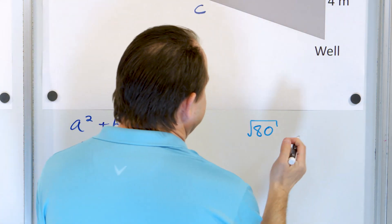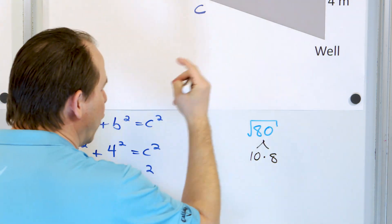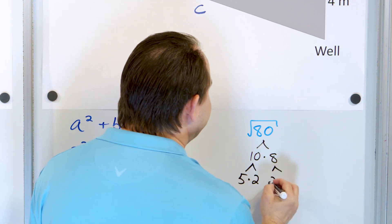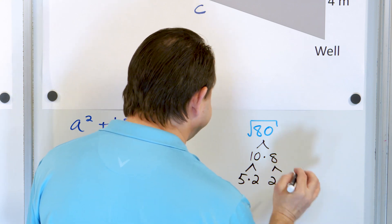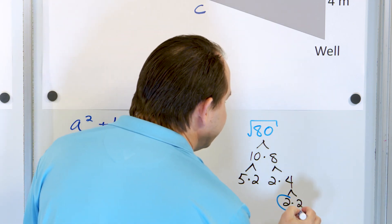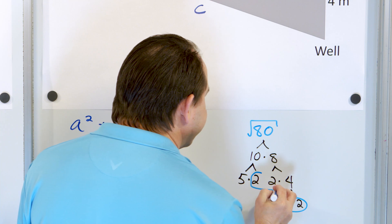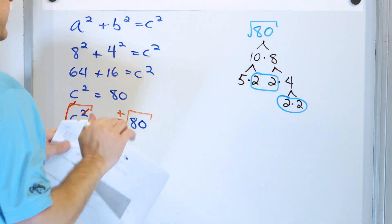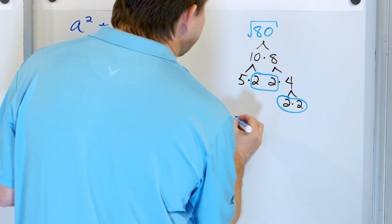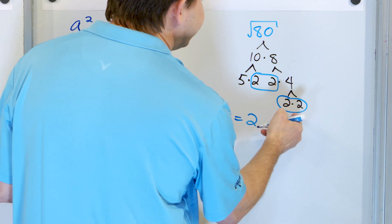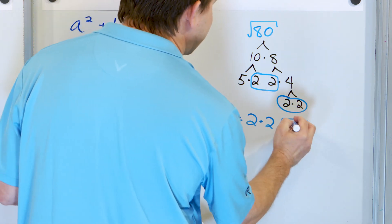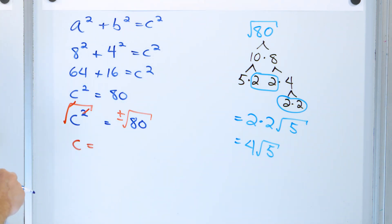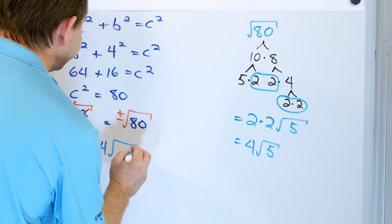Let's simplify √80. I'll factor it as 10 × 8. The 10 is 5 × 2, and the 8 is 2 × 4, and the 4 is 2 × 2. Looking for pairs: here's a pair of 2s, and here's another pair of 2s. The 5 doesn't have any partner. Each pair comes out as a single 2, and they're multiplied together to give 4 outside. What's left underneath is 5. So √80 = 4√5, and c = 4√5 meters.